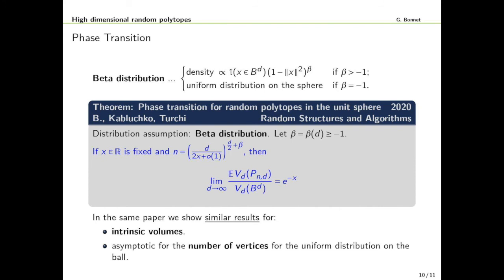The next step is as presented at the beginning of this talk to show a phase transition and this is what we did together with Zakhar Kablushko and Nicola Turchi where we showed the following phase transition still in the model where the distribution is any of the beta distributions. In this paper we were also able to extend this to the setting where we consider intrinsic volumes instead of volumes and also get the asymptotic for the number of vertices in the case where the distribution is the uniform one in the ball.